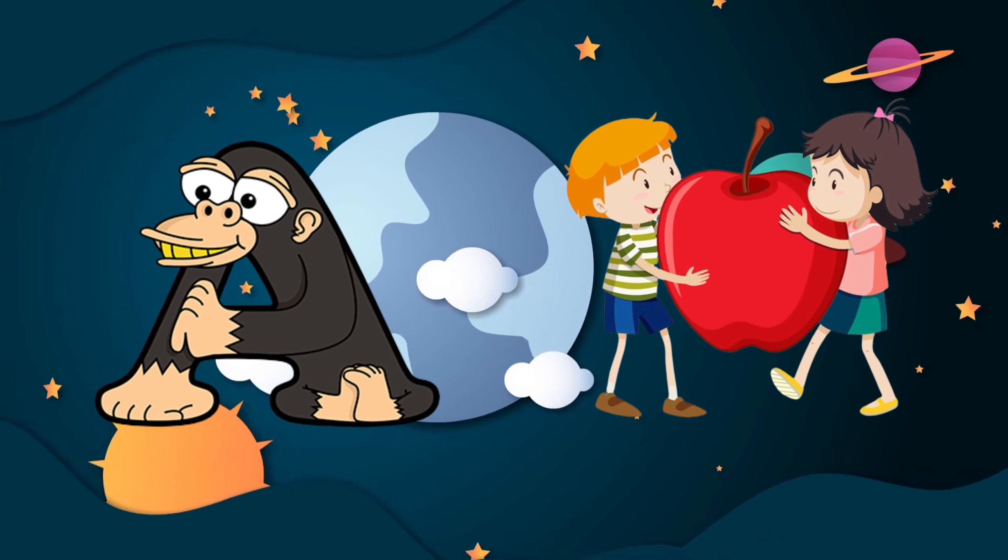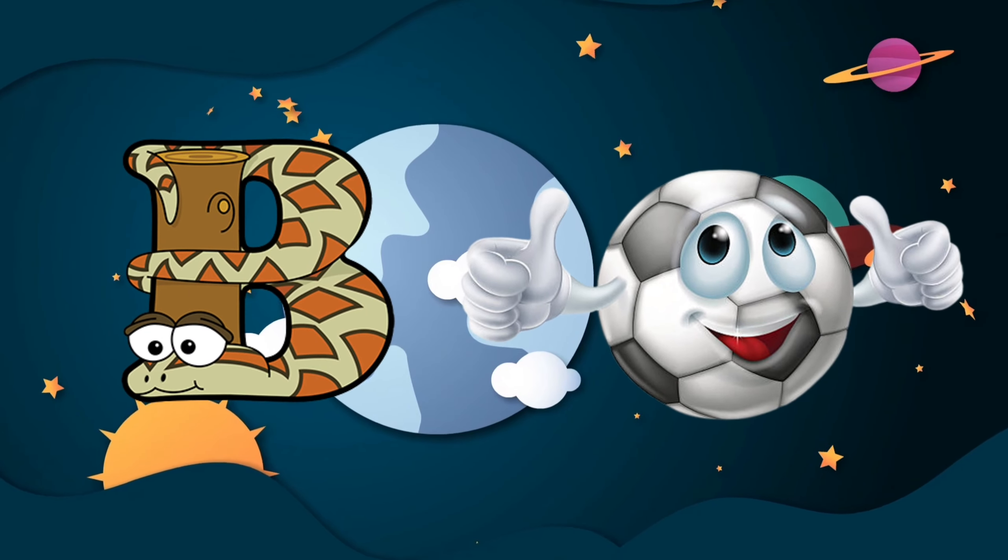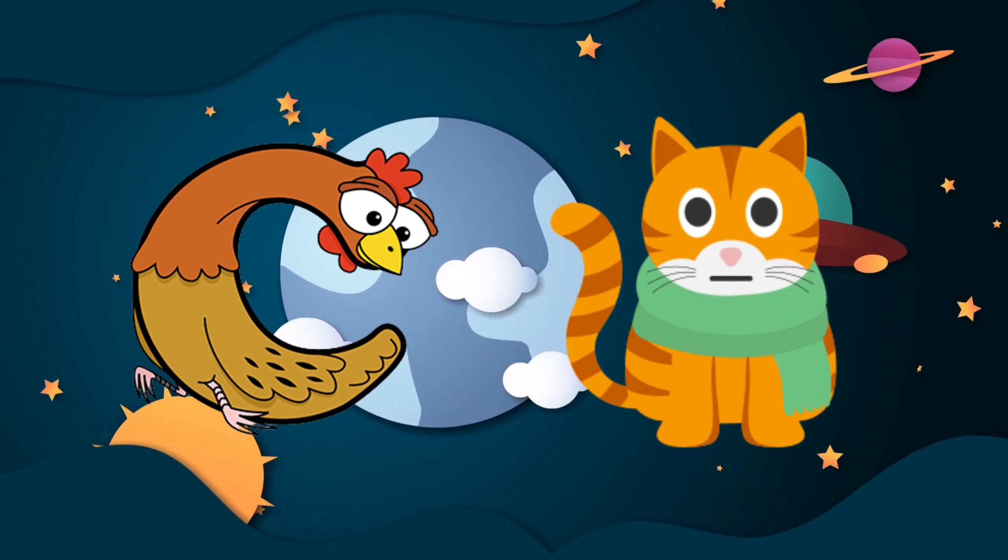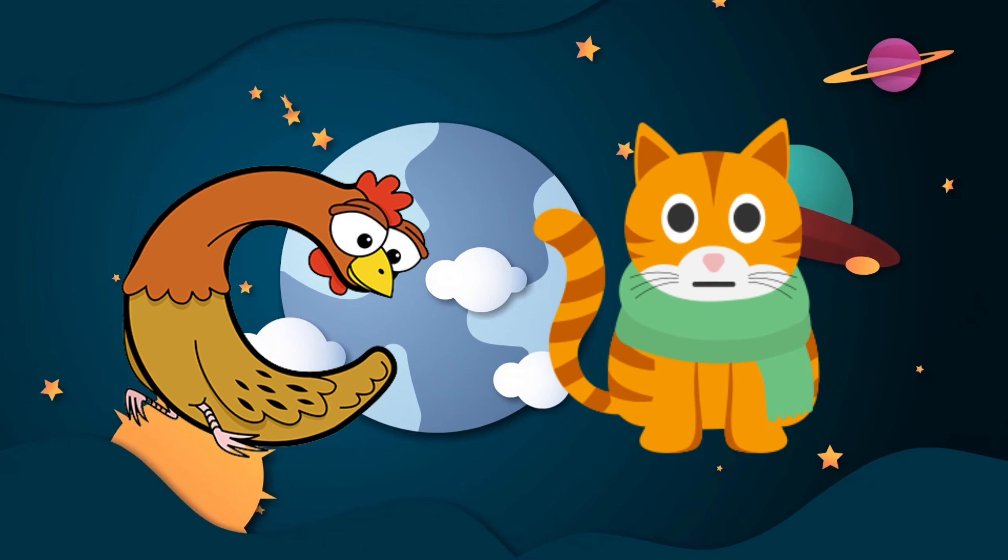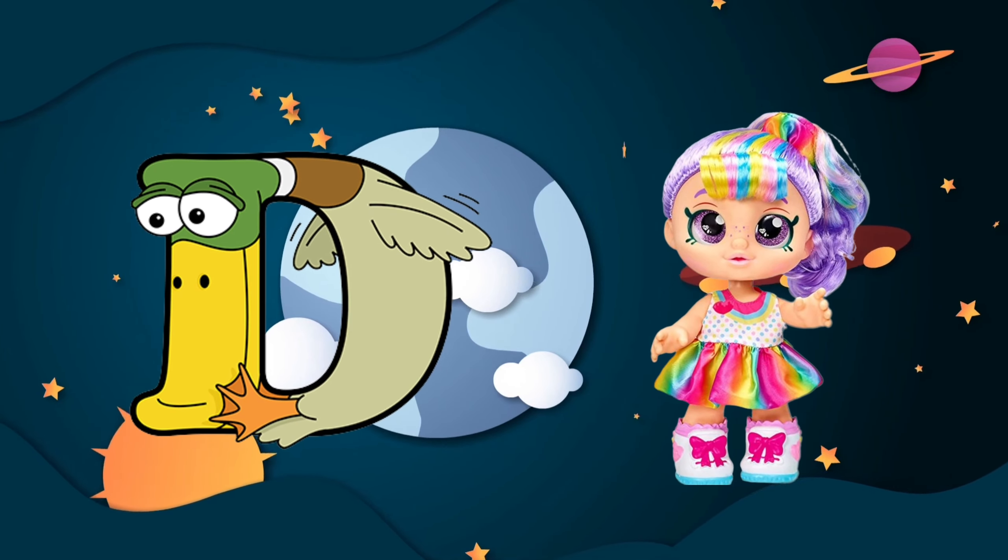A is for apple, a-a-apple. B is for ball, f-f-ball. C is for cat, c-c-cat. D is for doll, d-d-doll.